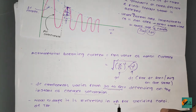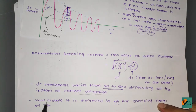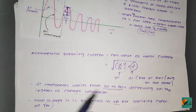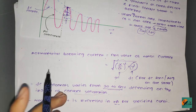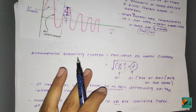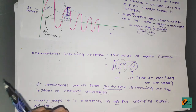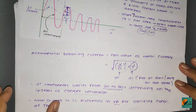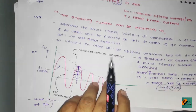Nowadays, the breaking current is expressed in kiloamperes for a specified condition of transient recovery voltage. In earlier days it was expressed in MVA so that fault levels could be determined, but now kiloamperes is the standard. This is all about the rated short circuit breaking current.